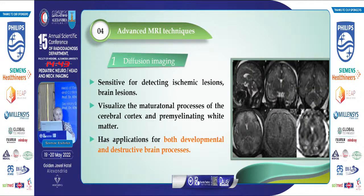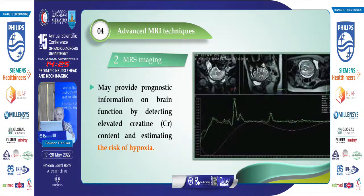Advanced techniques used in fetal MRI include diffusion-weighted imaging, which is very sensitive for detecting ischemic and brain lesions, and assesses the maturational process of the cerebral cortex and white matter, with many applications for both developmental and destructive brain processes. MR spectroscopy is also used to provide prognostic information on brain function by detecting elevated creatinine content and estimating the risk of hypoxia.